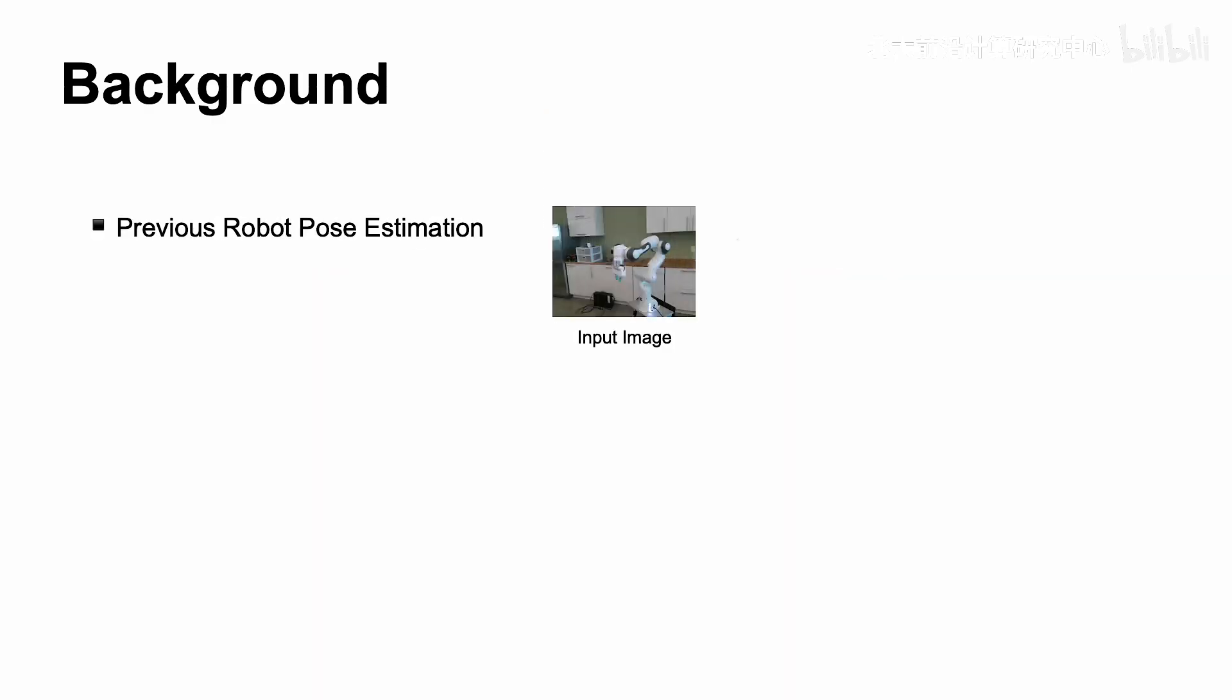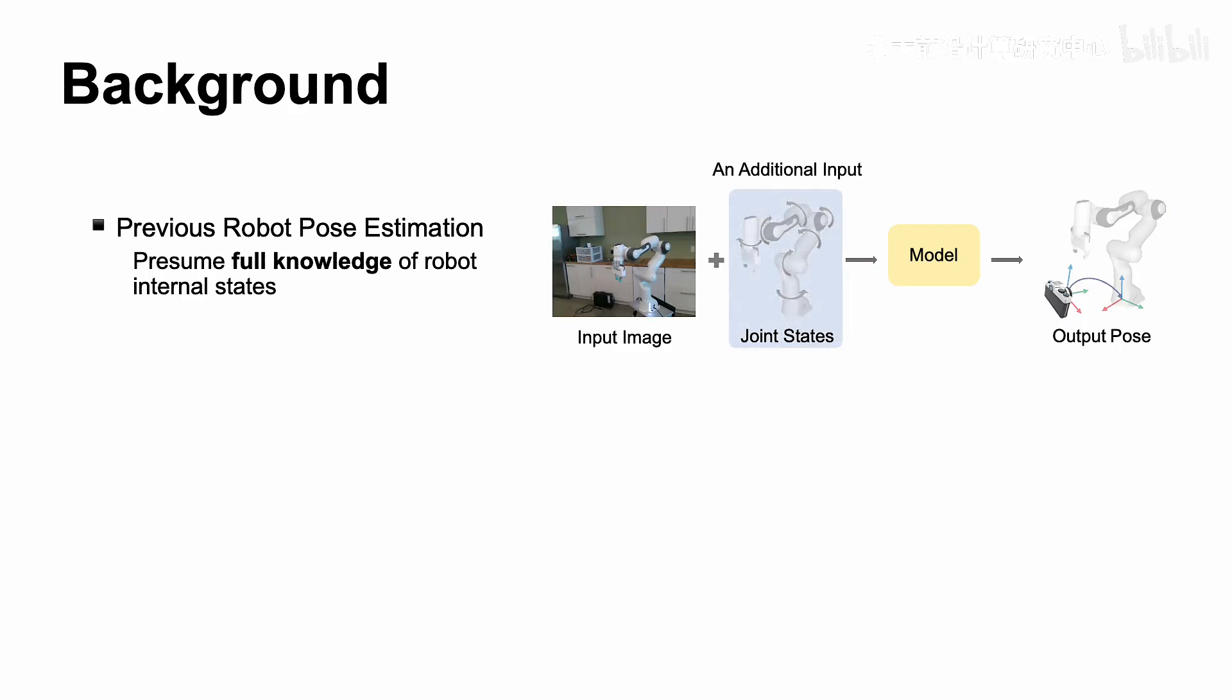While previous robot pose estimation methods have achieved promising performance, most of them presume full knowledge of robot internal states, for example, robot joint angles. The ground-truth joint state prior is served as an additional input to alleviate the difficulty of the estimation process.